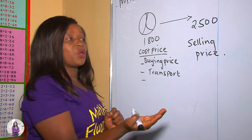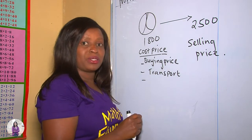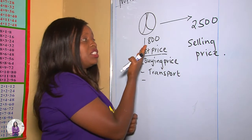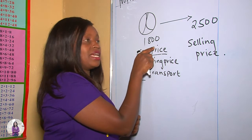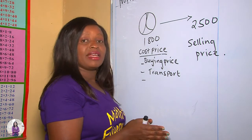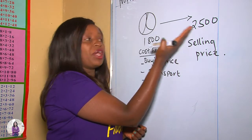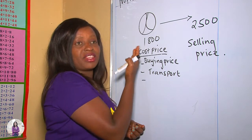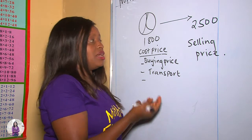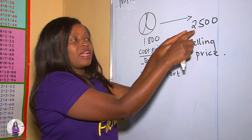Now, this person sold the ball at $2,500. This is a bright person, somebody very brilliant. Because if he could have bought the item at $1,800 and come to sell it at $1,500, then he could have lost his money. But you can see he sold the item for more than he bought it. Therefore, he made extra money. As you can see, he only spent $1,800, but when selling he gets $2,500.